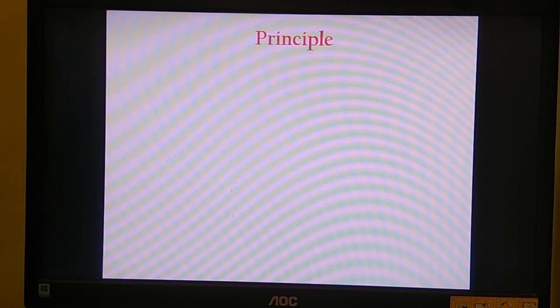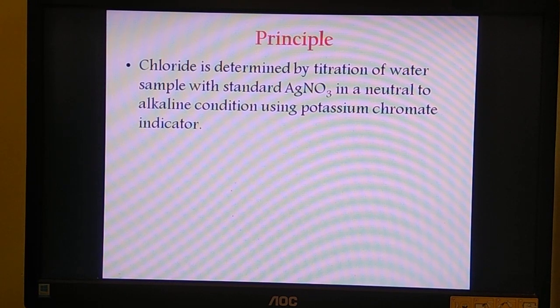Moving on to the principle of Mohr's method. The principle is: chloride is determined by titration of water sample using standard AgNO3 solution in a neutral to alkaline condition in presence of potassium chromate indicator. When we say standard AgNO3 solution, it is the solution whose concentration is known—let me make it simple—whose normality or molarity or molality is known. With respect to Argentometric titration, we are concentrating on normality.